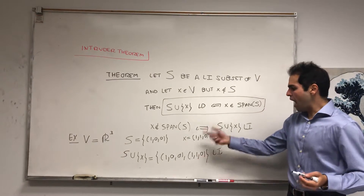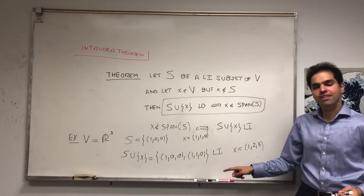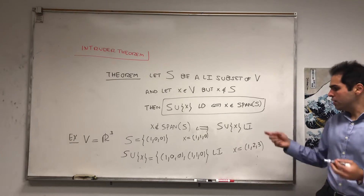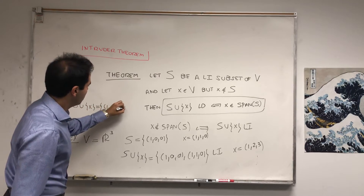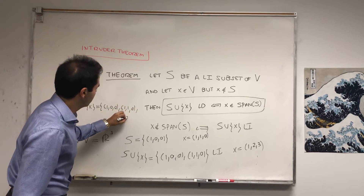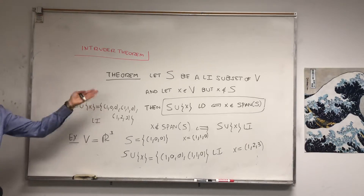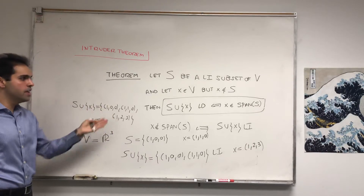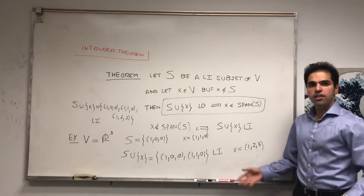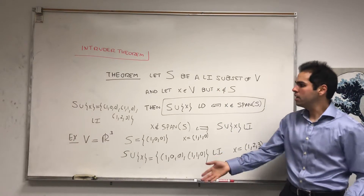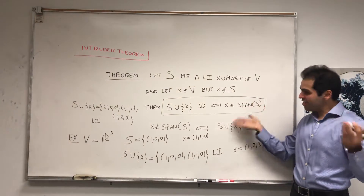Then you can continue and add another vector, say (1,2,3). The vector (1,2,3) is not in the span of that set because the last coordinate would have to be zero. So S union X, which is {(1,0,0), (0,1,0), (1,2,3)}, is still linearly independent. It turns out that if you add any other vector to this set, the new set will be linearly dependent, which means any vector in R3 is in the span of this set — meaning this set spans all of R3. Because it's linearly independent, it is a basis for R3.